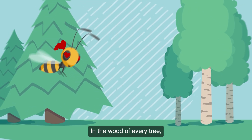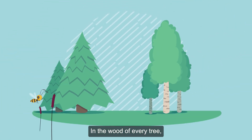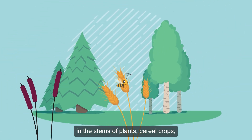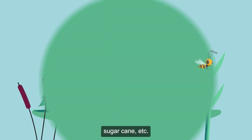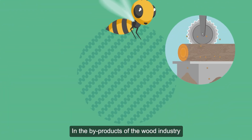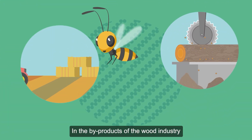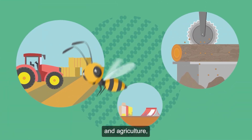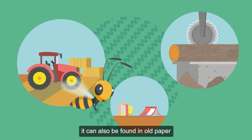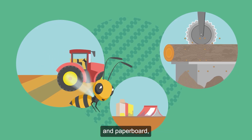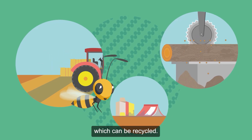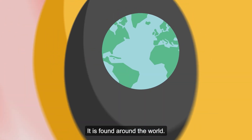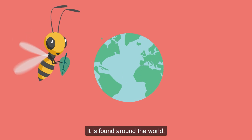It can be found in the wood of every tree, in the stems of plants, cereal crops, sugarcane, etc. It is also found in the byproducts of the wood industry and agriculture, as well as in old paper and paperboard, which can be recycled. It is found around the world.